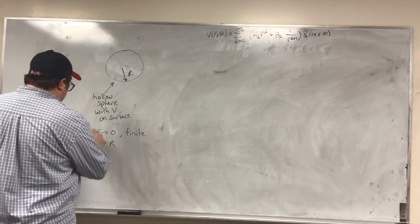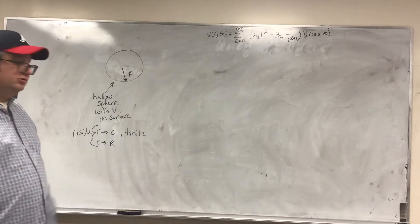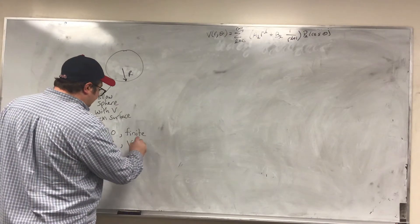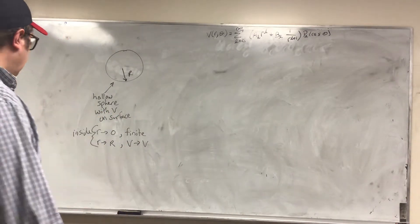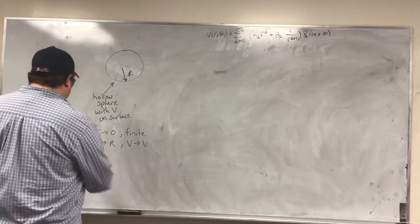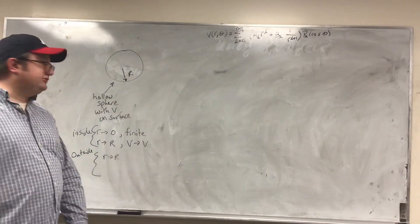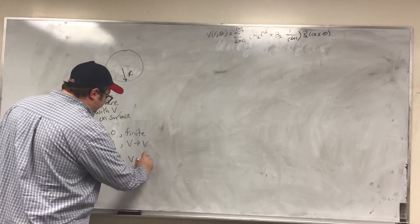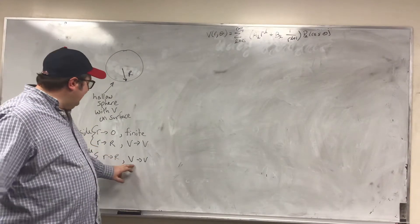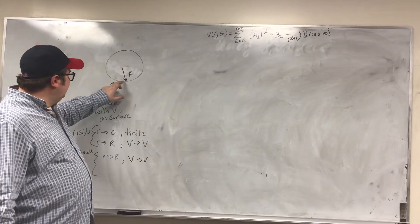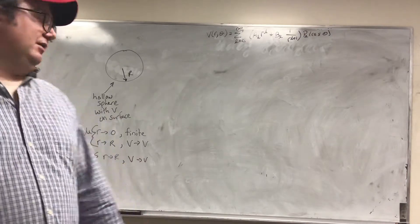So when R goes to R, and this is in the inside of the sphere, I know that the potential is going to go to the voltage on the surface. Outside, when R goes to R outside, just like it did on the inside, I know that the potential is continuous across the boundary. So V is going to equal V.